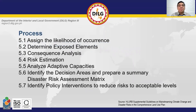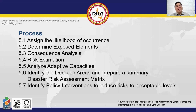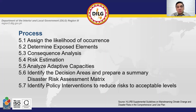There are seven processes involved in disaster risk assessment. First, determine the likelihood of occurrence. Then determine exposed elements, consequence analysis, risk estimation, analyze adaptive capacities, identify the decision areas, and prepare a summary disaster risk assessment matrix. And lastly, identify policy interventions to reduce risk to acceptable levels.